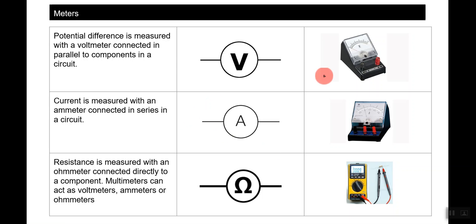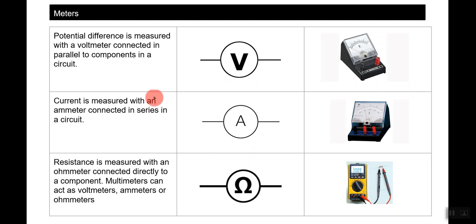Meters are used to measure the different quantities — voltage, amps, and ohms — and there are symbols we use to represent these when drawing a simple circuit. The first quantity we want to look at measuring is voltage.